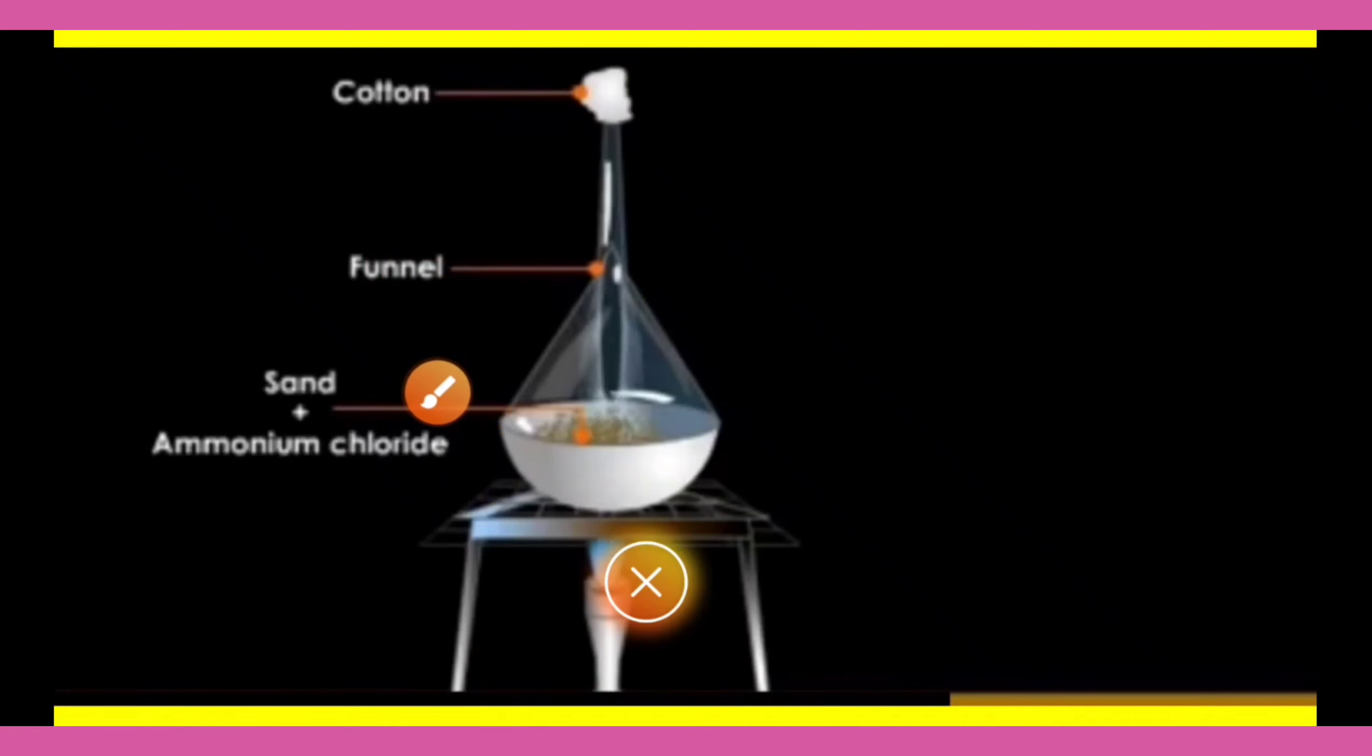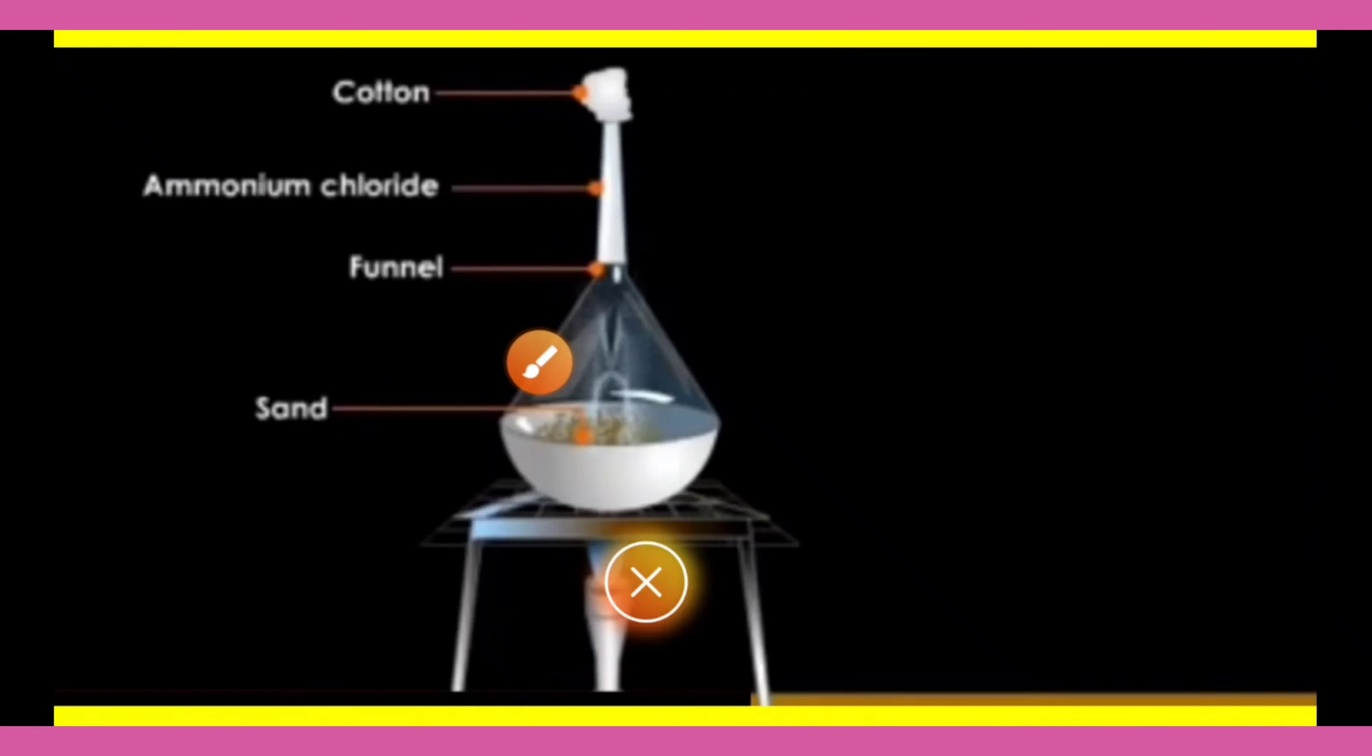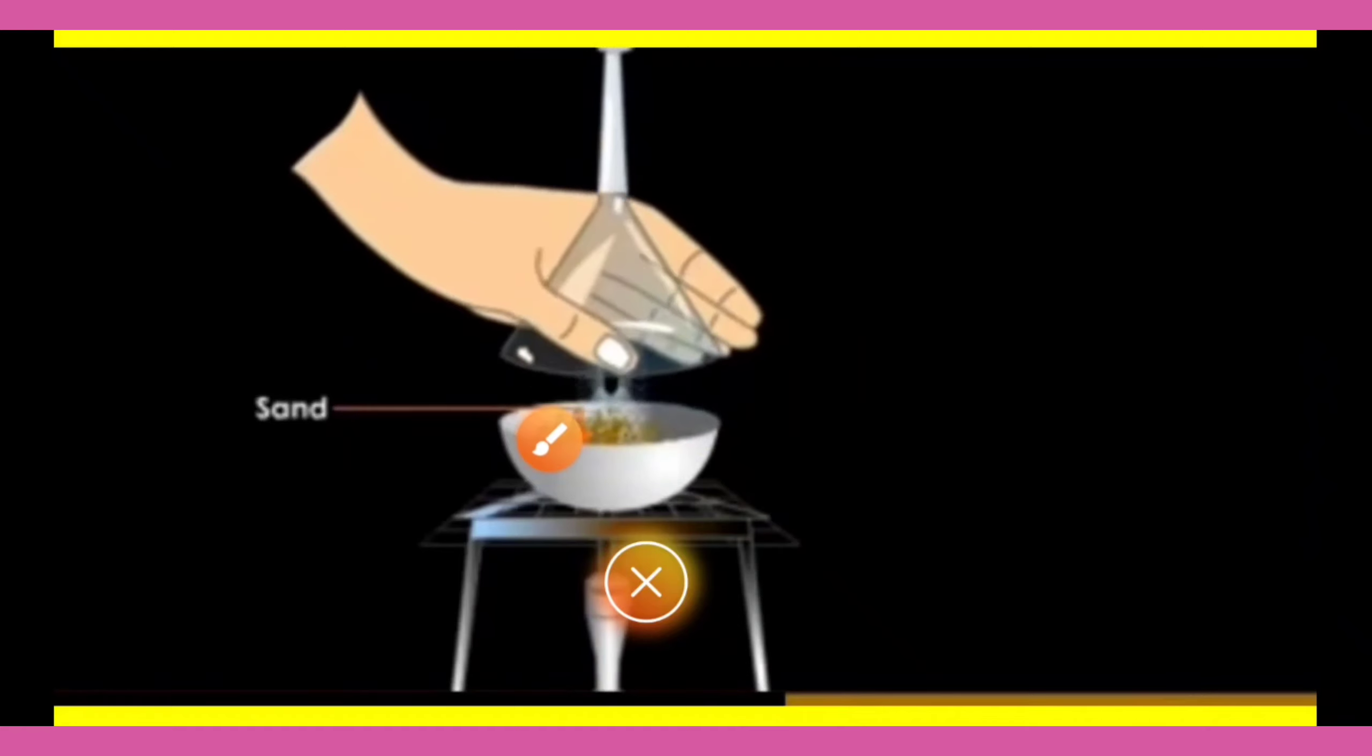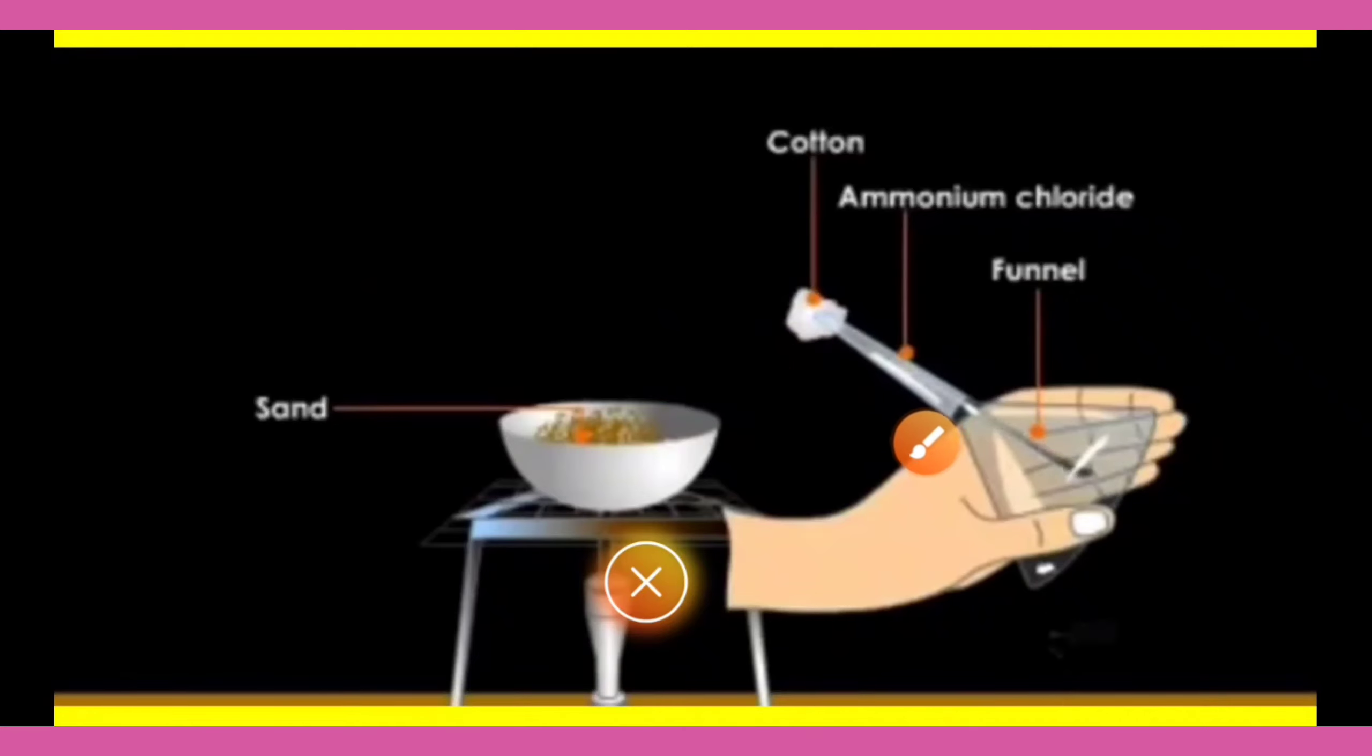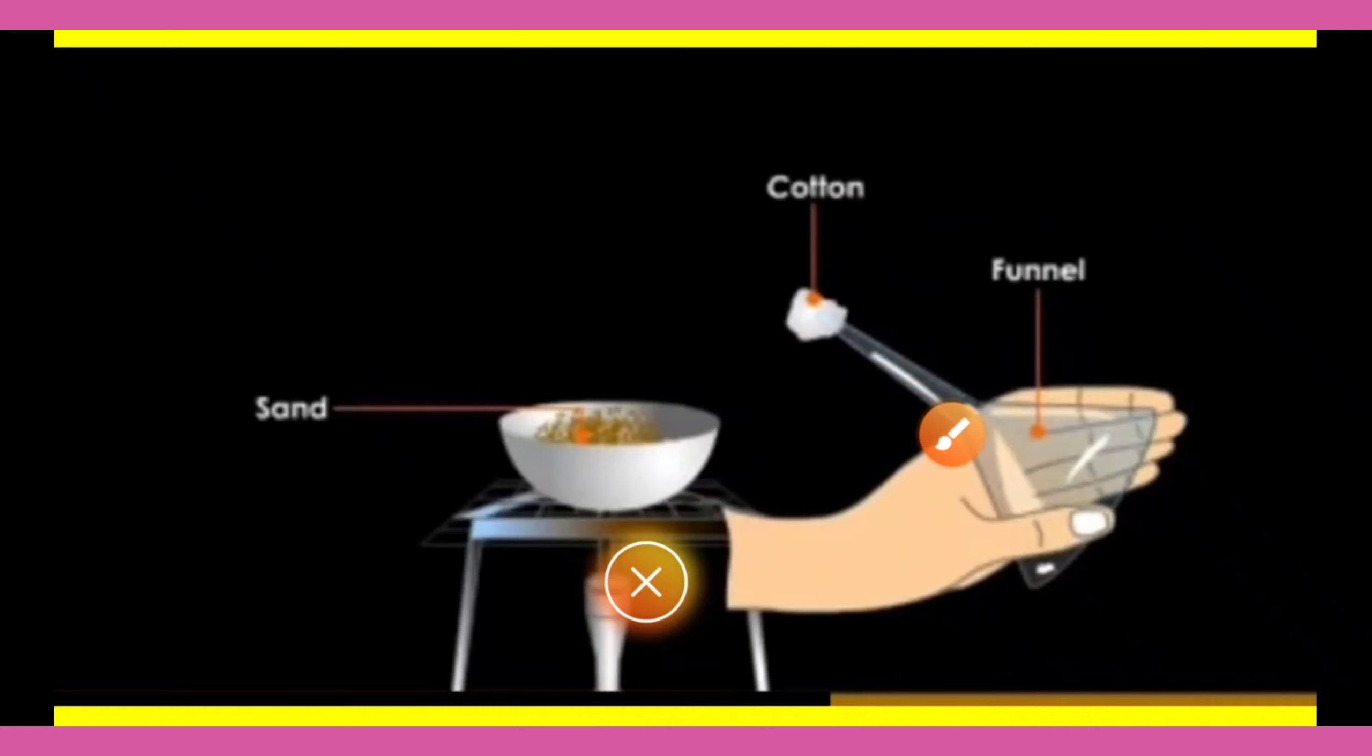The pure volatile substance called ammonium chloride changes into vapors and condenses on the walls of the funnel. The non-volatile impurities remain in the china dish. Now, remove the funnel from the china dish and scrape the ammonium chloride separately.